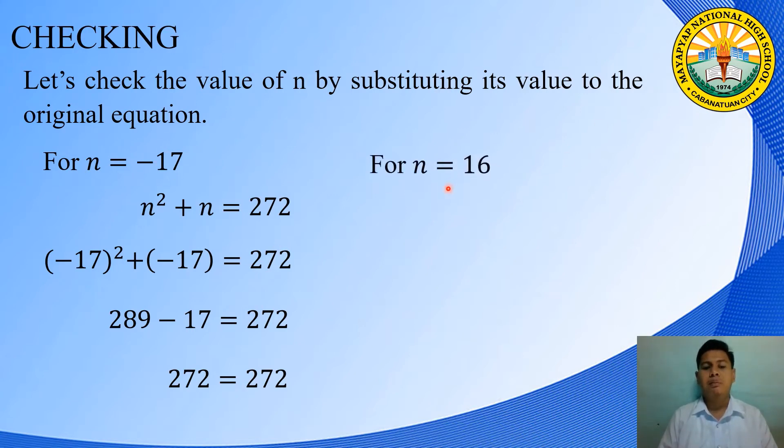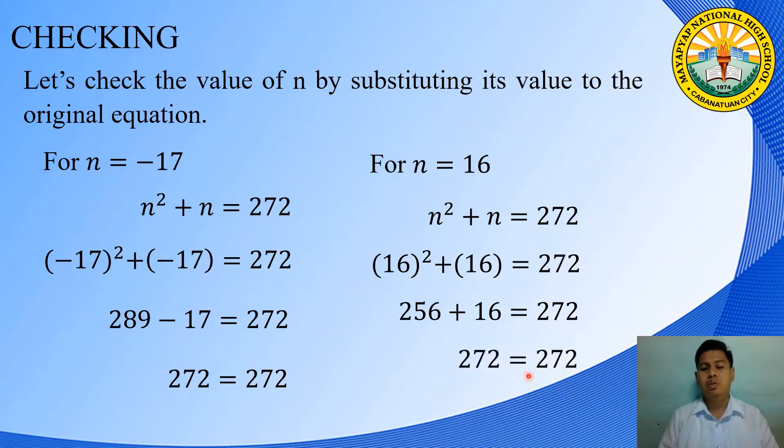Next, for n = 16. Replacing n in the equation, n² + n = 272, it will become 16² + 16 = 272. 16 squared is 256 plus 16 is equal to 272. Adding the two numbers, 272 = 272. Since it satisfies the equation, 16 is a value of n. These are both solutions to the problem.